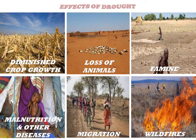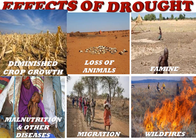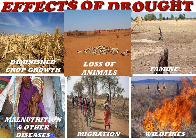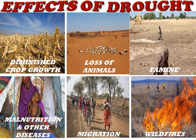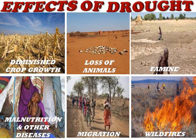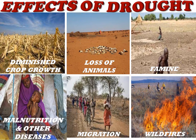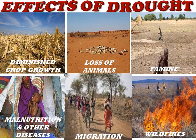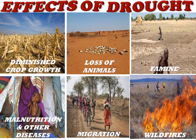Effects of drought include: diminished crop growth, loss of animals, famine, malnutrition and other diseases, migration, and wildfires.